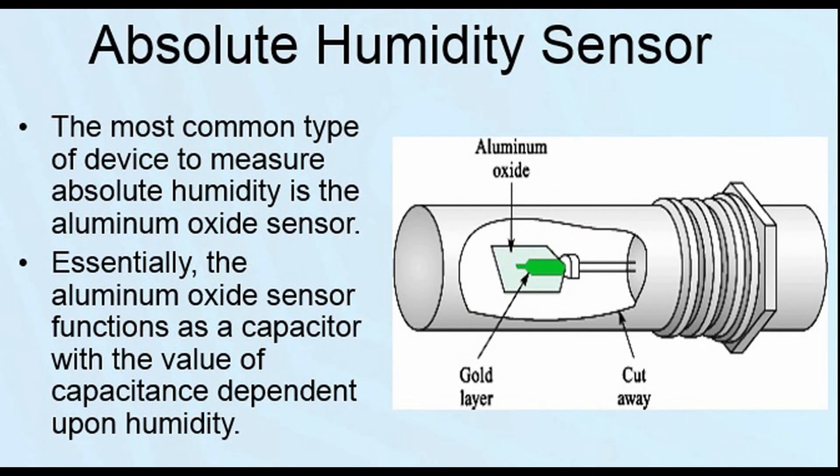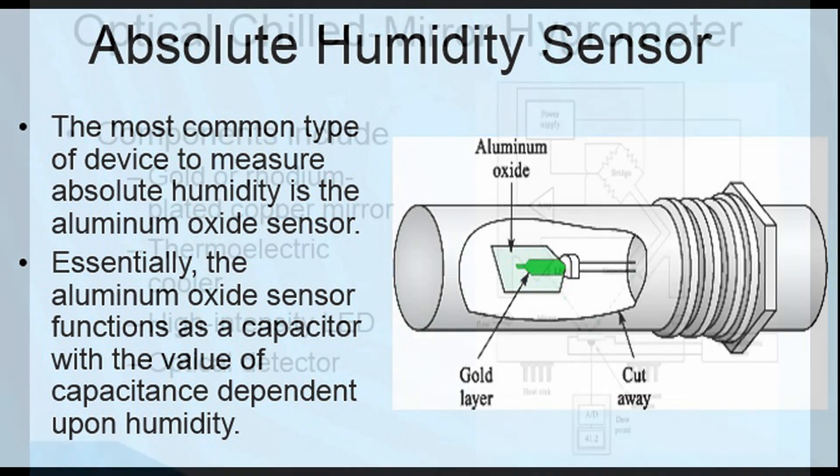Here's a sensor for detecting humidity. Notice that you're using gold. And anytime you're using gold, that means you have an expensive device. It just simply shows how difficult it can be to measure absolute humidity.